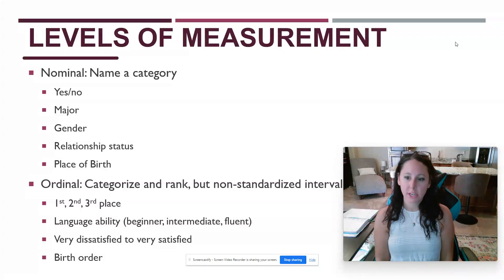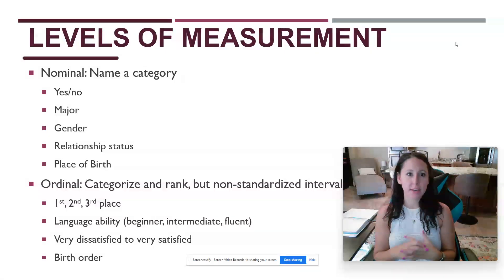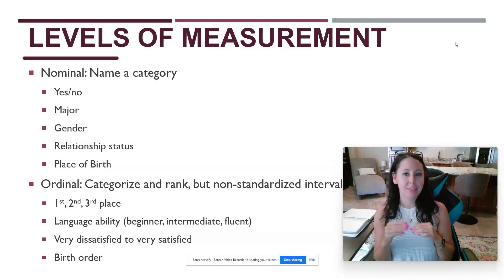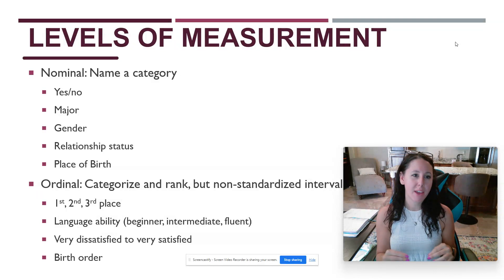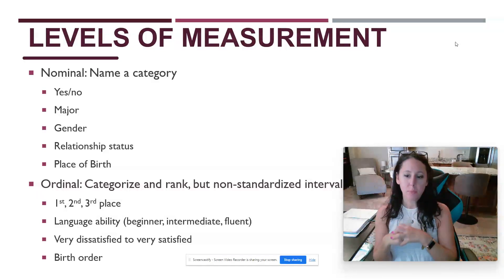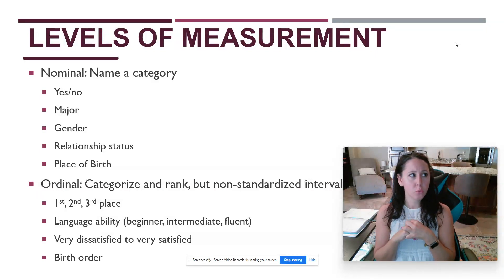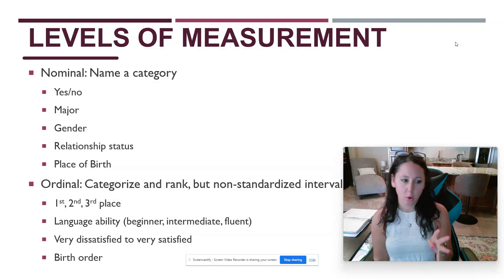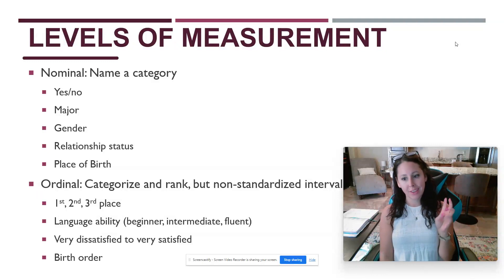Continuing our conversation about introducing variables, we're going to talk about the levels of measurement in a variable. We break this down into four different categories: nominal, ordinal, interval, and ratio.